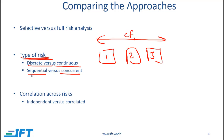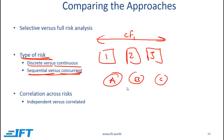The other dimension is sequential versus concurrent risk. If we have a project happening in multiple phases — say A, B, and C — and the risks depend on what happened earlier, then we are dealing with sequential risk. If the risk does not need to be considered in phases, then we have concurrent risk.